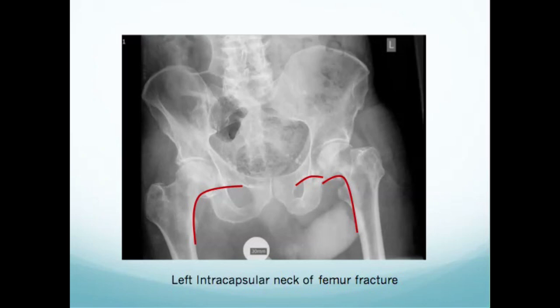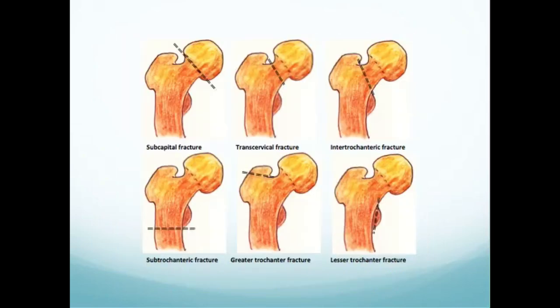To differentiate intracapsular from extracapsular fractures on x-ray, identify the intertrochanteric line, which is where the capsule inserts. If the fracture is distal to the intertrochanteric line, it is an extracapsular fracture. If it is proximal — more towards the femoral head — then it is an intracapsular fracture. This distinction drives our management principles.